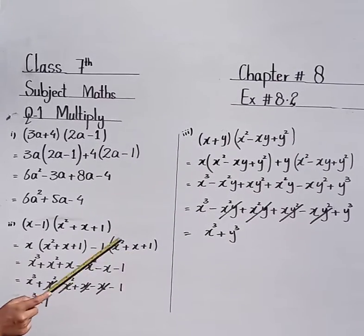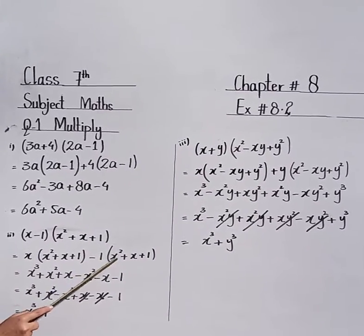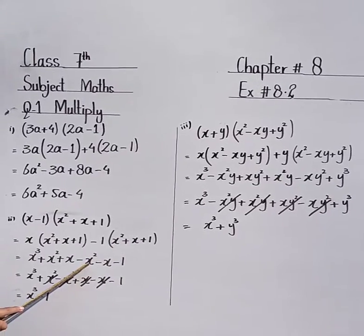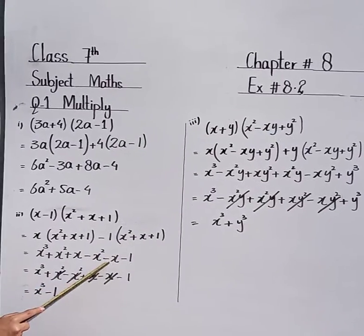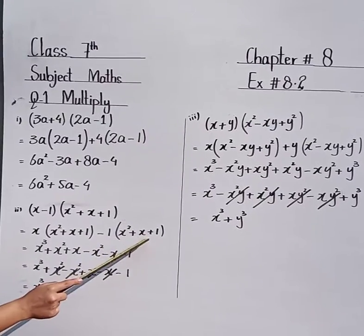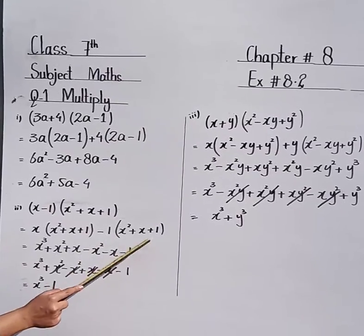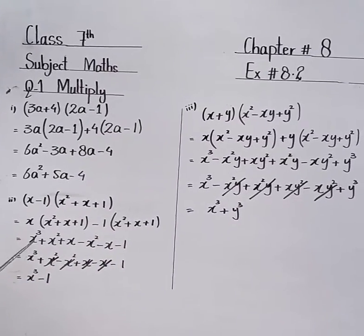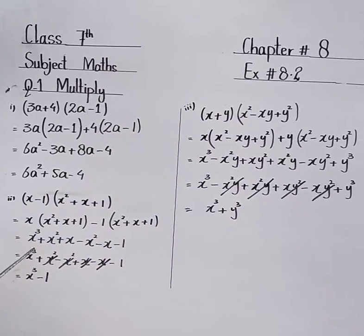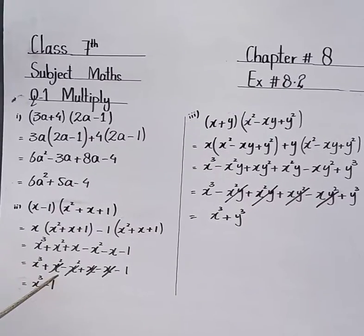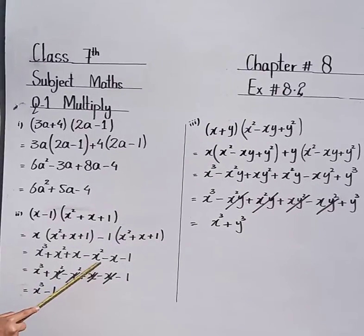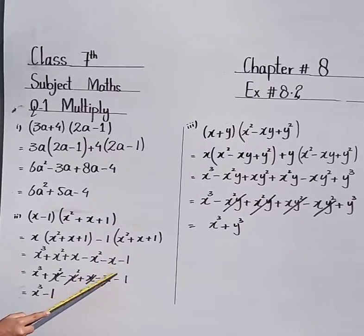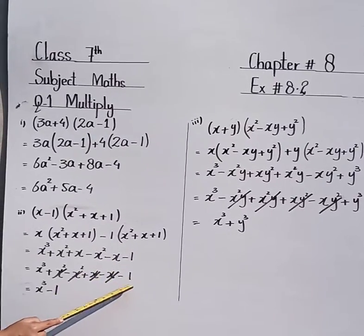Now multiply minus 1 inside the bracket. Minus 1 multiplied by x squared is minus x squared. Minus 1 multiplied by x is minus x. Minus 1 multiplied by 1 is minus 1. Now arrange the terms: x cubed, plus x squared, minus x squared, plus x, minus x, minus 1.